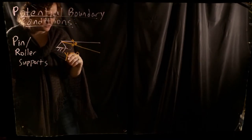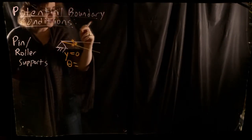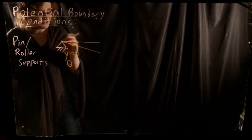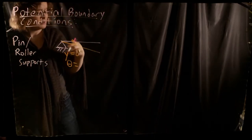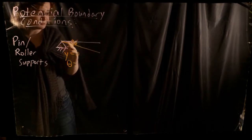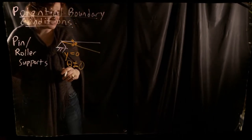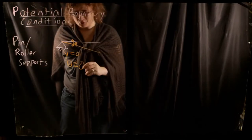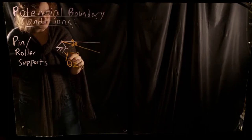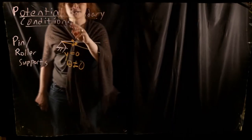However, at a pin or roller support, the only thing constrained is vertical motion — we don't know anything about the rotation. By definition, a pin or roller support provides no resistance to rotation and no moment capacity. So if the beam wants to rotate, that support will freely let it. Therefore, theta is not necessarily equal to zero at a pin or roller — we have no information about the slope at that location.